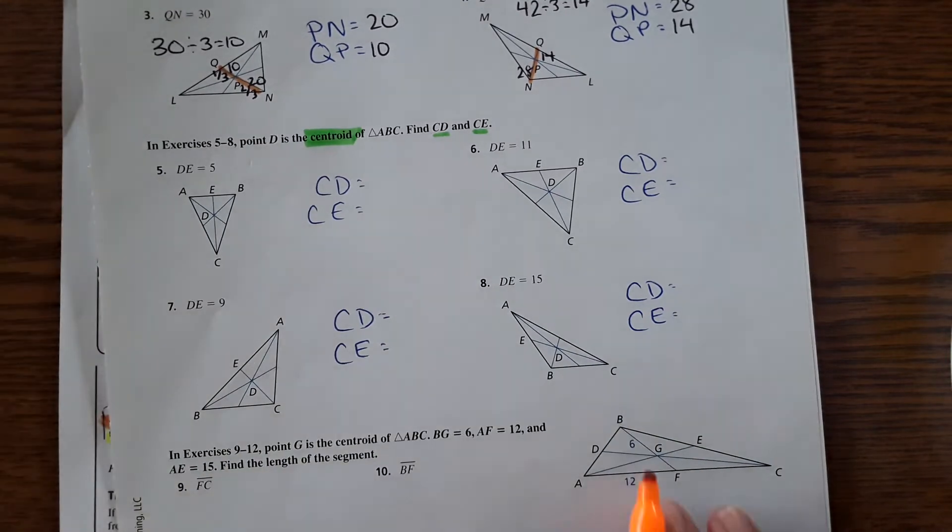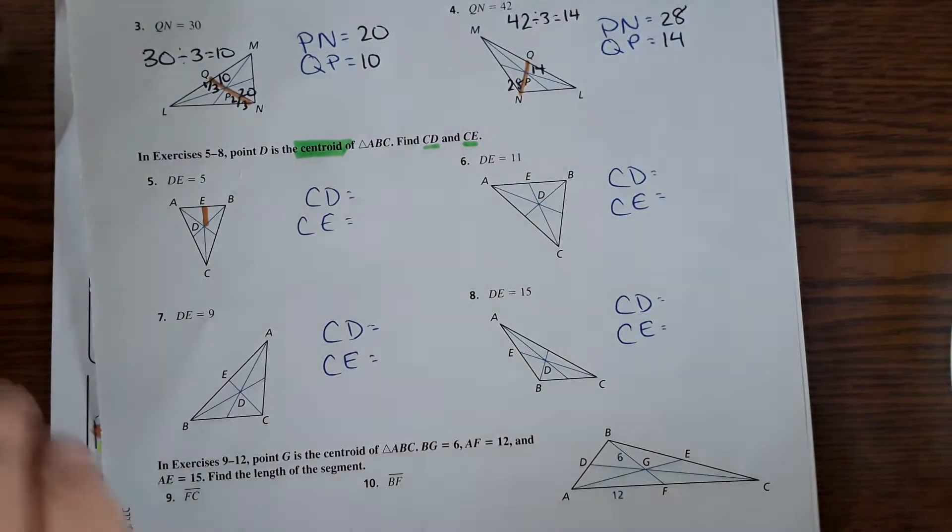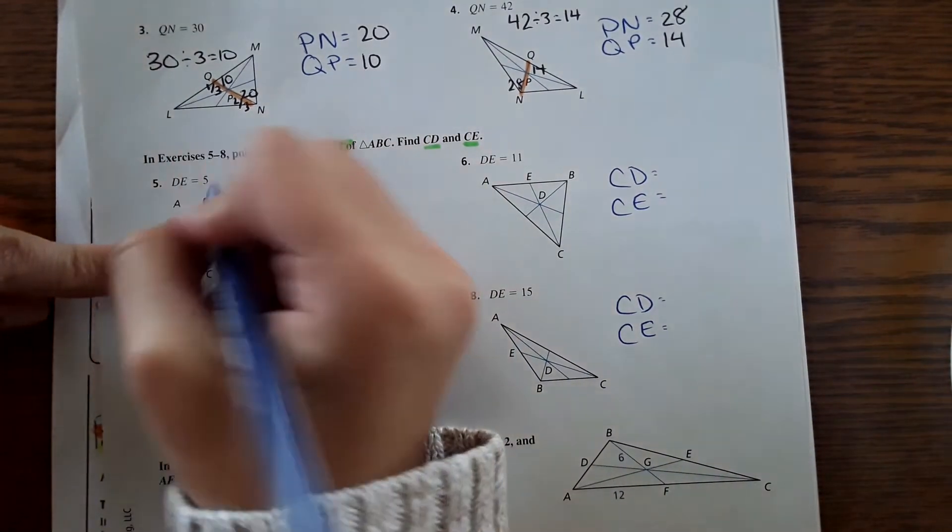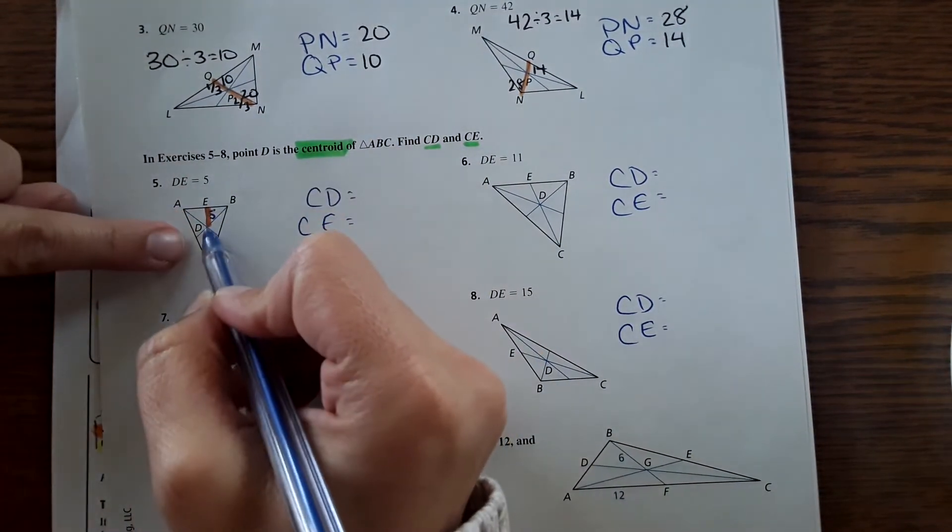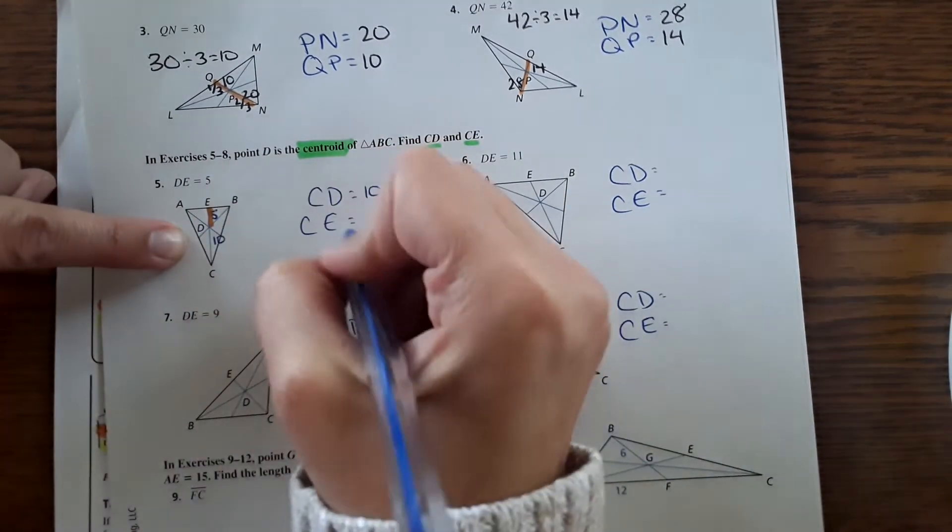Okay, so these are a little bit different. This one says DE right here is five. So that's the shorter part, and then it wants to know what CD is. That would be double, so 10. And then the whole thing would be 15.